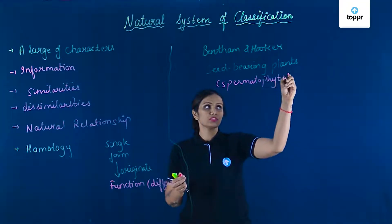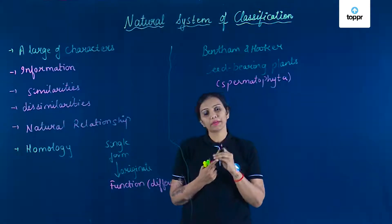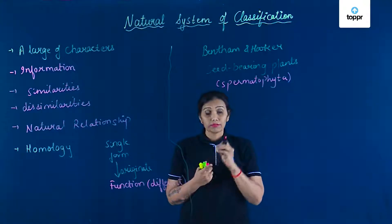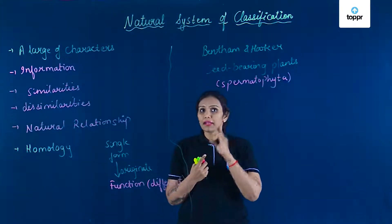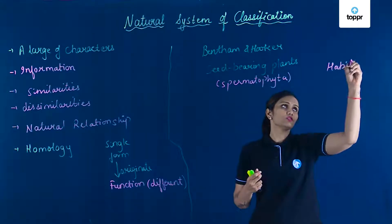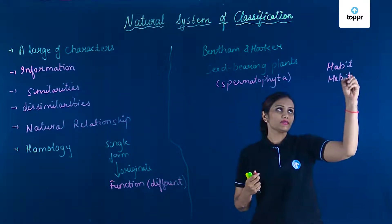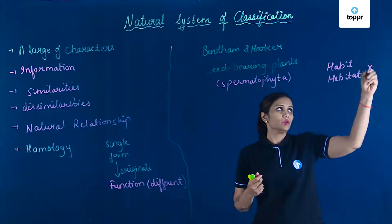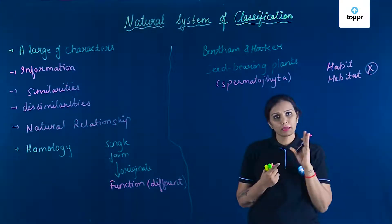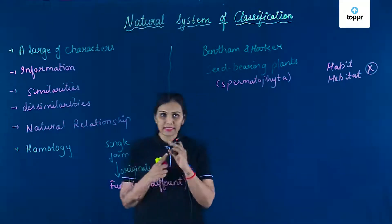Har organism ko, plant ko study kiya. Certain set of characters — unka reproduction dikha gaya hai, anatomy dekhi gayi hai. But it is not on the basis of their habit and habitat. Woh areal hai, terrestrial hai, aquatic hai — iske basis pe nahi hai. It is on the basis of various characteristics.